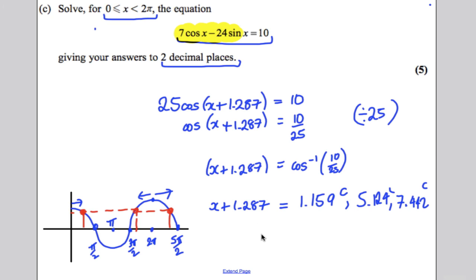So if we subtract the 1.287 off, we would get ourselves that x is equal to... For this one here, we would get 3.837, and for this one here, we would get... And we would go into 2 decimal places, let's not forget. So 3.84, and for this one here, we would get ourselves 6.16 radians, and we're done. They are our answers for 5 marks.